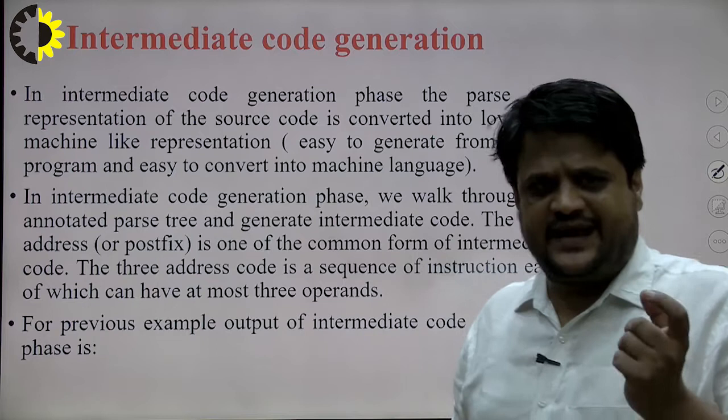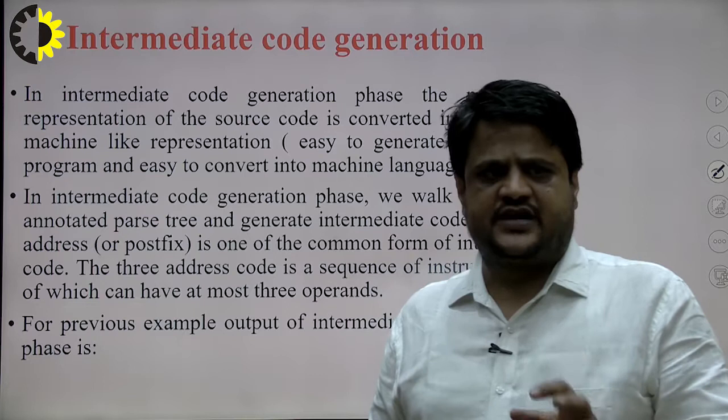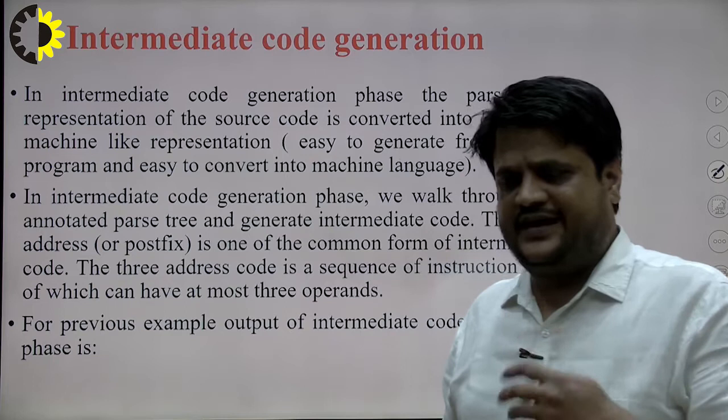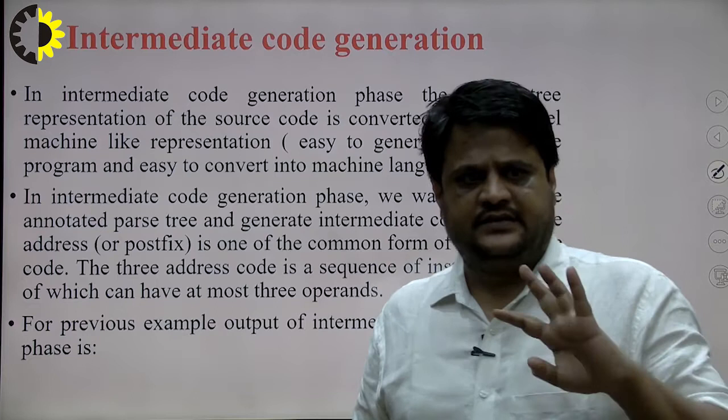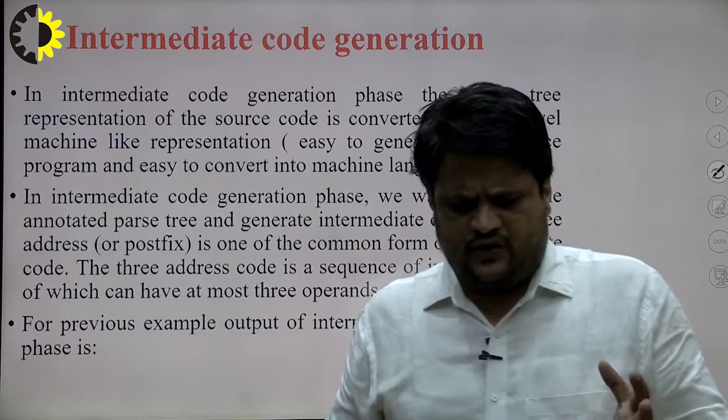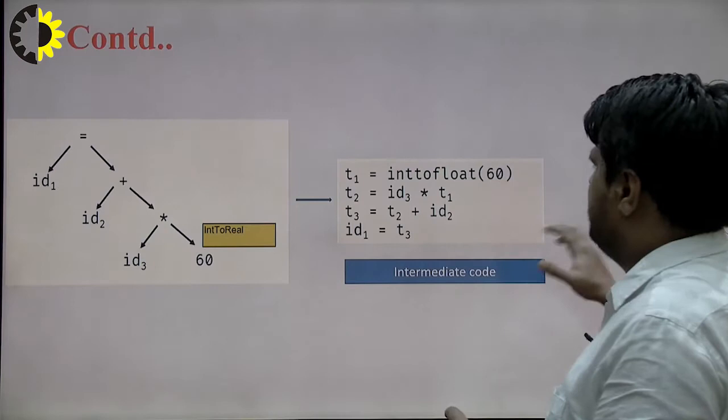Three address code is a sequence of instructions in which each instruction has at most three operands — meaning there is a maximum involvement of three memory locations or three addresses. For the previous example, the output of the intermediate code generation phase is this one.